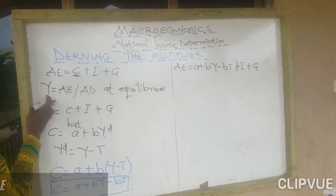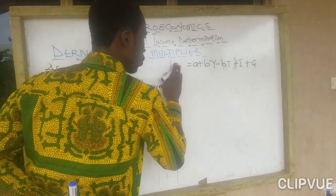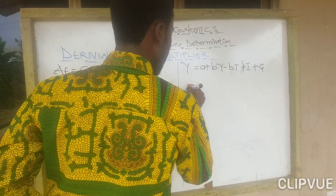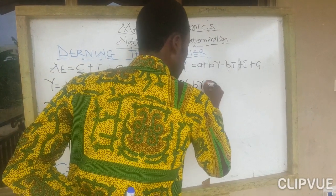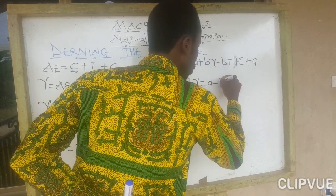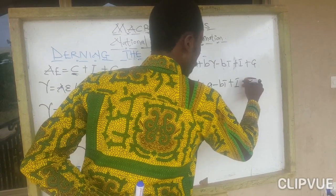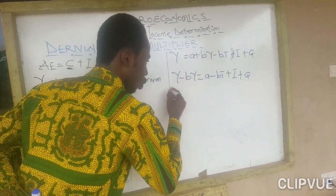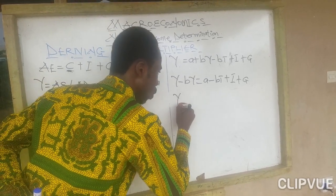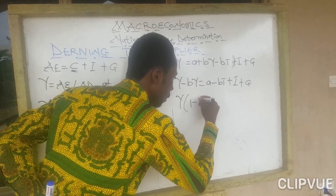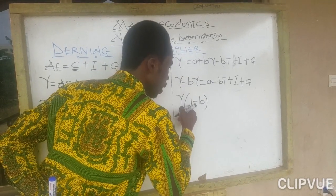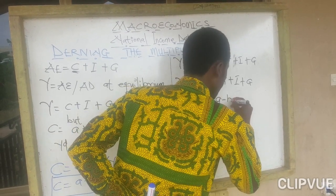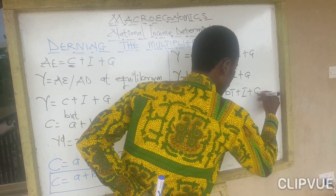Since aggregate expenditure is the same as Y, we replace it with Y and group like terms. We have Y on the left and bY on the right, so we get Y minus bY equal to a minus bT plus I plus G. By factorization, the common variable is Y, giving us Y(1 minus b) equal to a minus bT plus I plus G.